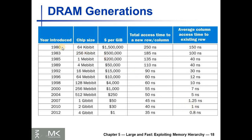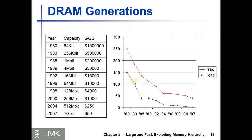This table shows the progress of DRAM generations from 1980 to 2012. The capacity increased exponentially over time and the cost per gigabyte decreased exponentially. The time to access a new row and column decreased from 250 to 35 nanoseconds, and the time to access a new column from the same row decreased from 150 to 0.8 nanoseconds — the improvement in column access is much greater than row access, as illustrated in the graph.